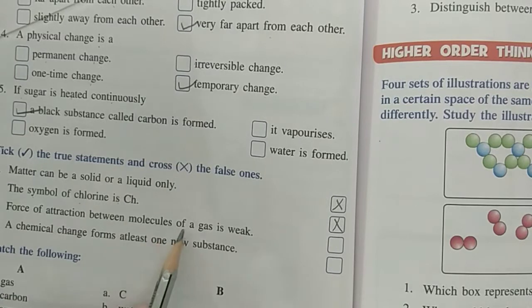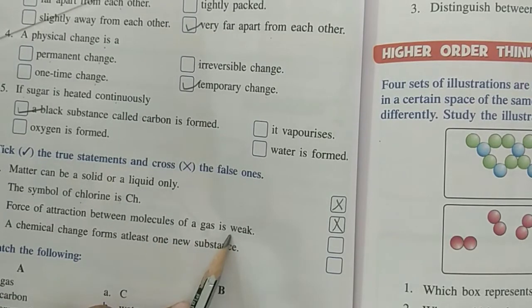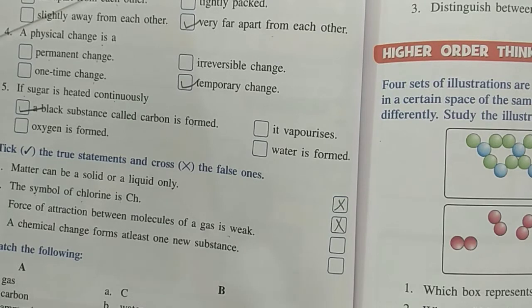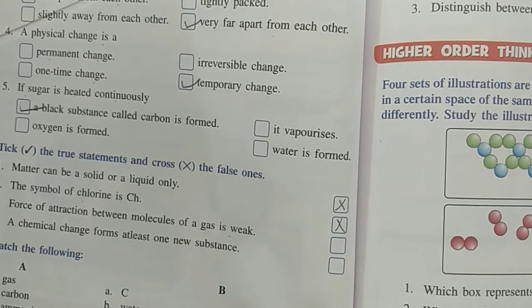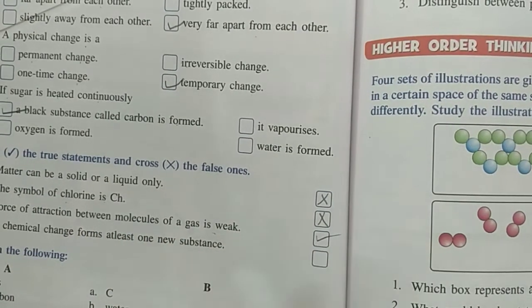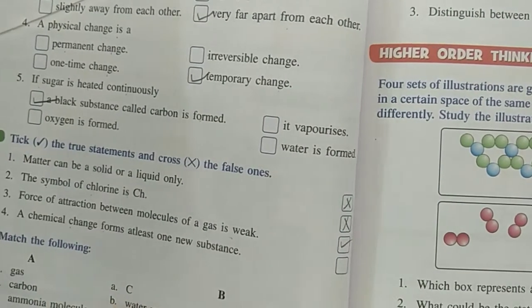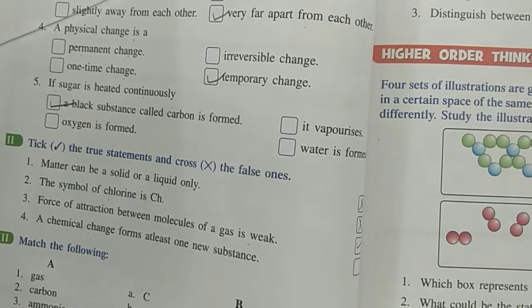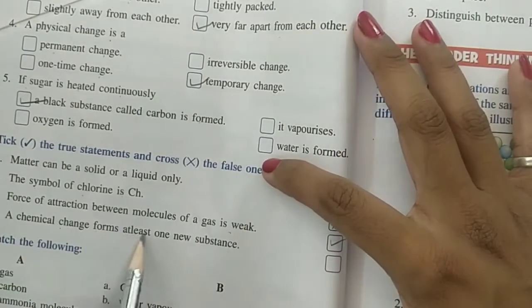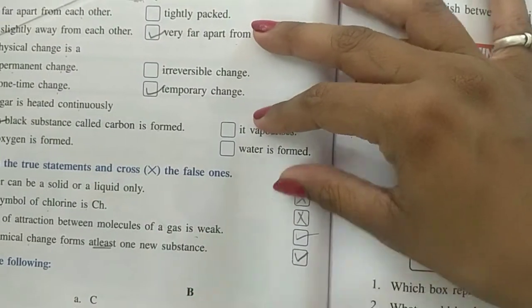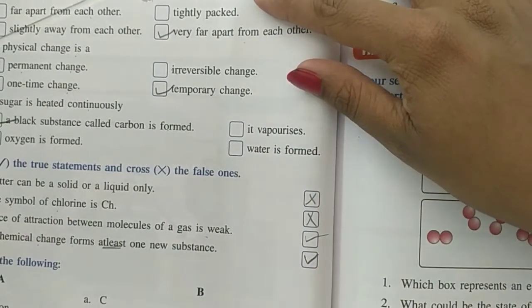The force of attraction between molecules of gas is weak. The force of attraction in gas molecules is weak or tight. Yes, it is weak. So this is right. Then next, a chemical change forms at least one new substance. Yes. After chemical change, at least one new substance is formed. Which is also right. So you have to tick in this way.